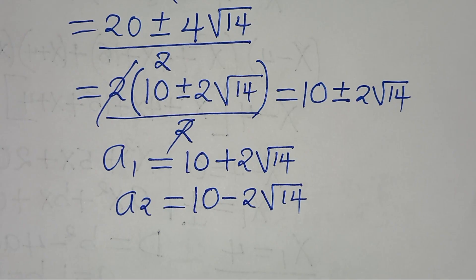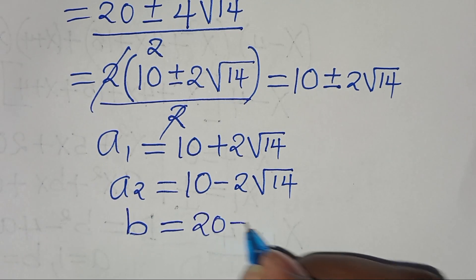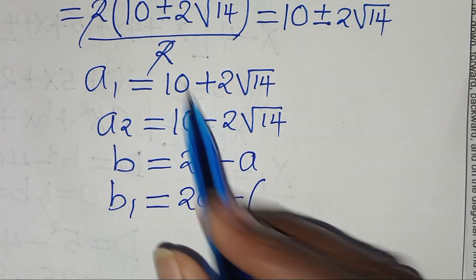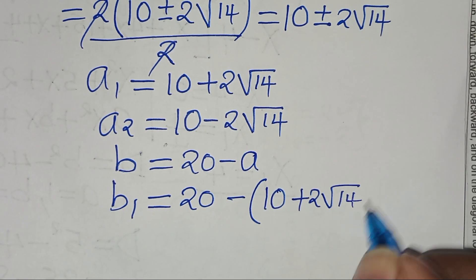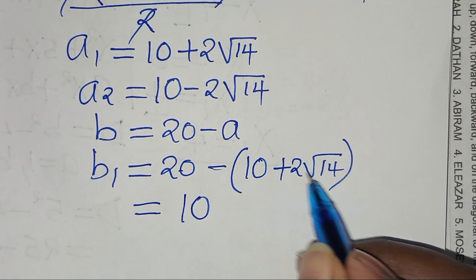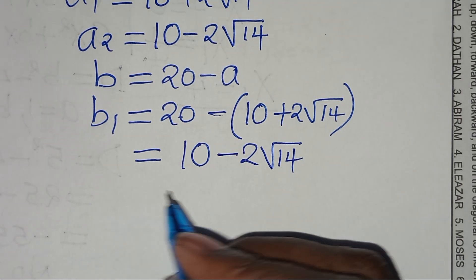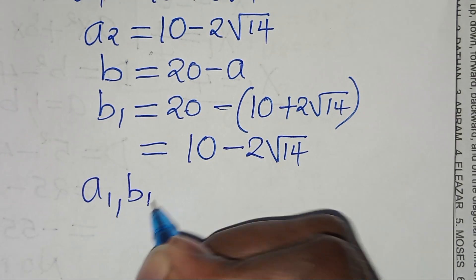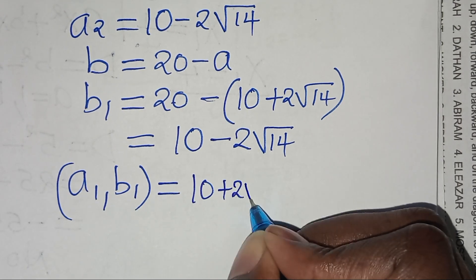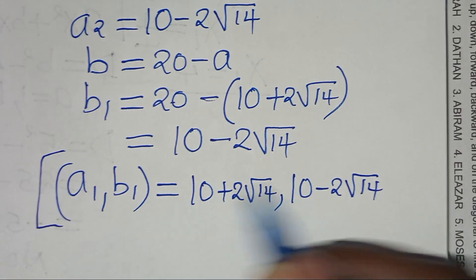So let's solve for the corresponding values of B. From equation 3, B equals 20 minus A. Starting with B1 equals 20 minus A1, where A1 is 10 plus 2 square root of 14: 20 minus 10 is 10, minus plus 2 square root of 14 becomes minus 2 square root of 14. So the first set of solutions is: A1, B1 = (10 + 2√14, 10 − 2√14).